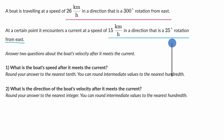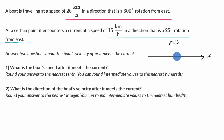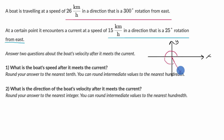Let's say that is my y-axis, and this over here is my x-axis. That first vector is a 300 degree rotation from east. East is in the positive x direction. This would be 90 degrees, 180 degrees, 270 degrees — going counterclockwise, because that's the convention for a positive angle. And then we'd go a little bit past 270, right over there. The magnitude of this vector is 26 kilometers per hour.